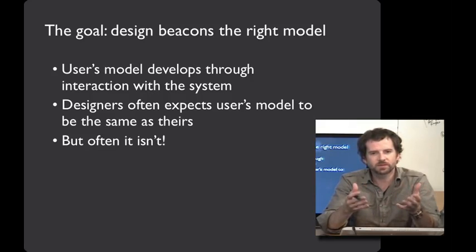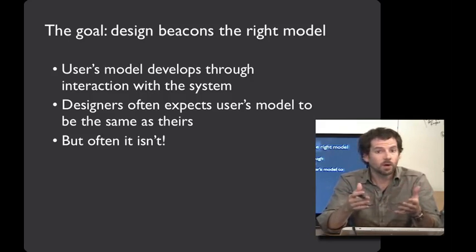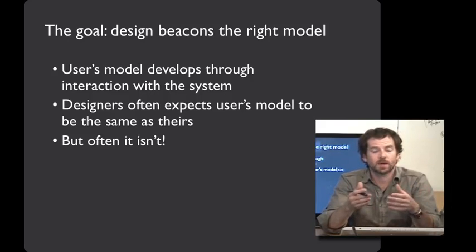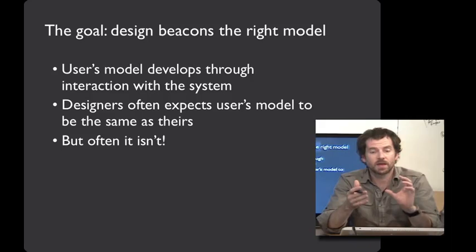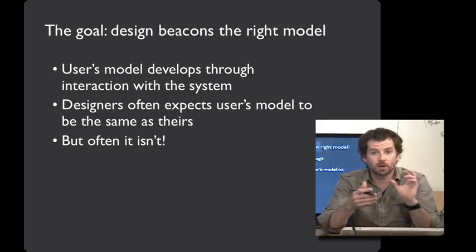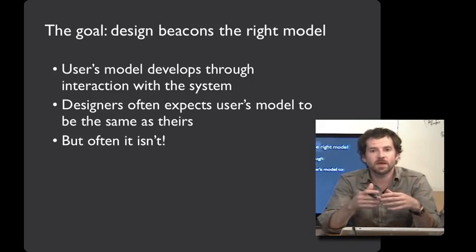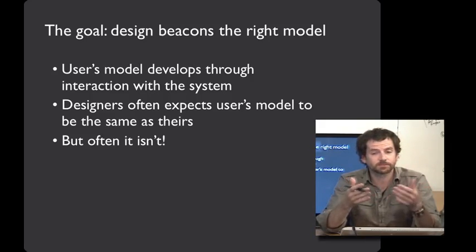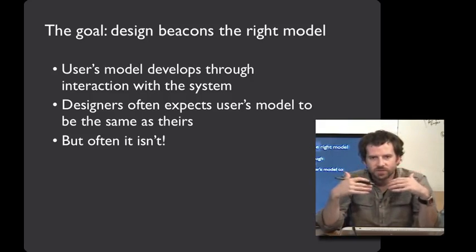Pause the video and think of how you might make this refrigerator interface better. One solution is to make the functionality match the user's model — have two blowers, one for each chamber — or simulate two blowers computationally with dials connected one-to-one. Alternatively, if the total-cold-plus-fraction model is needed for cost reasons, you could use a diagram or visual cue to explain what's happening rather than cryptic text. In all cases, the goal is for the user interface to convey to the user what mental model they should use when thinking about the system.